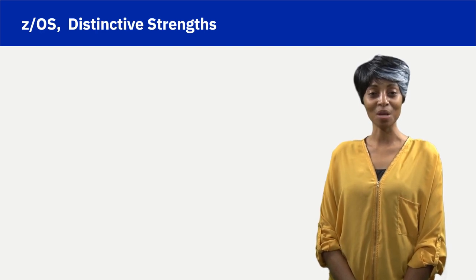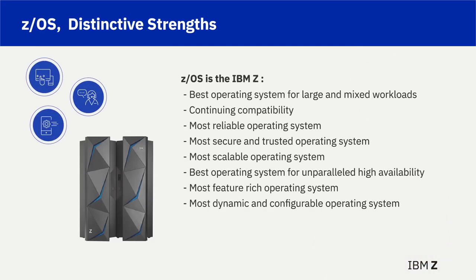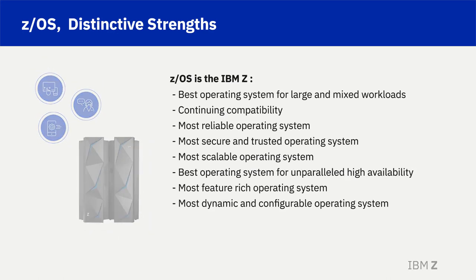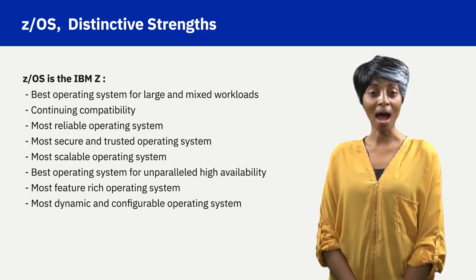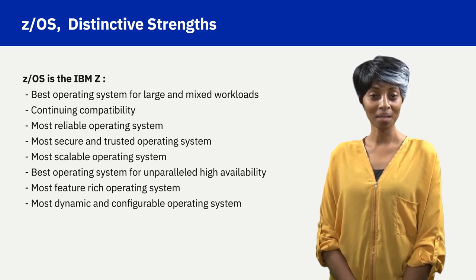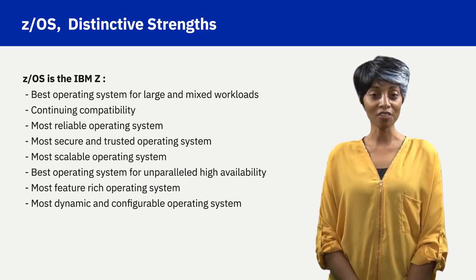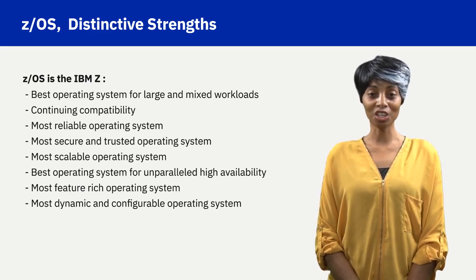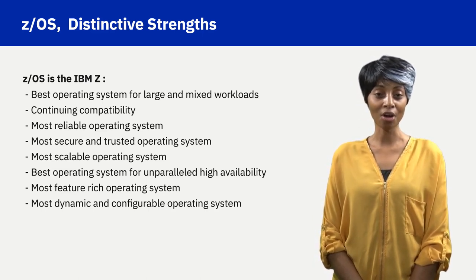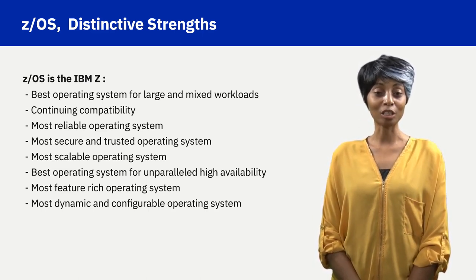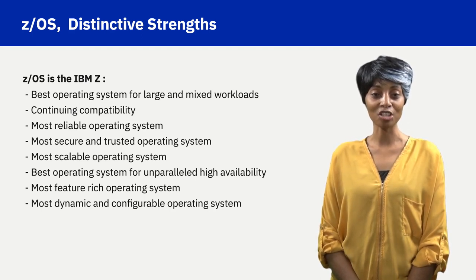The distinctive strengths of ZOS are many. ZOS technology genetics are from the operating system in the original IBM mainframe, with decades of technology advancements. The mainframe hardware and ZOS operating system grew up together and are highly complementary for reliability, availability, serviceability, scalability, security, and performance. What ZOS does better than any other operating system includes handling very large and diverse workloads.